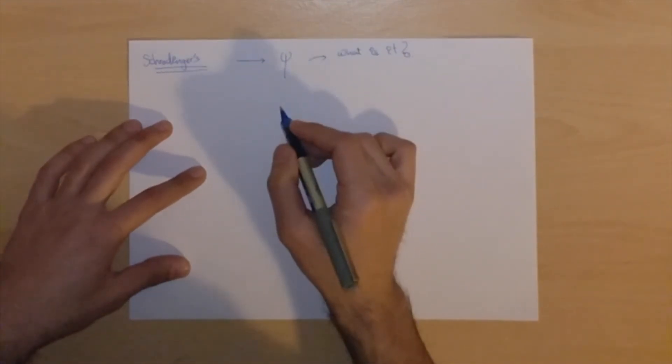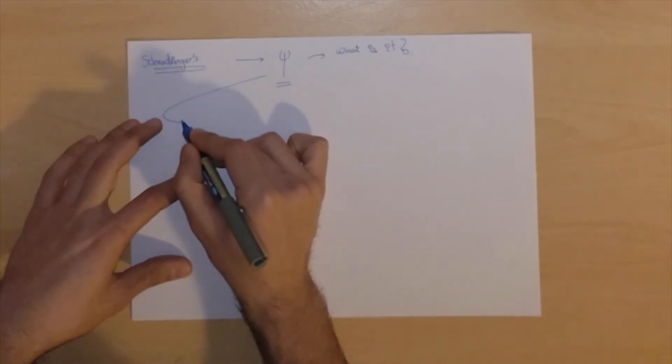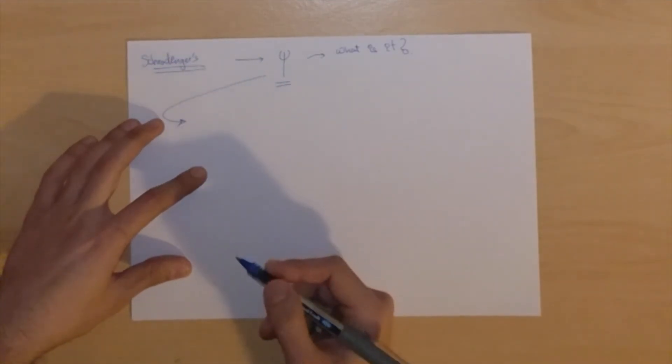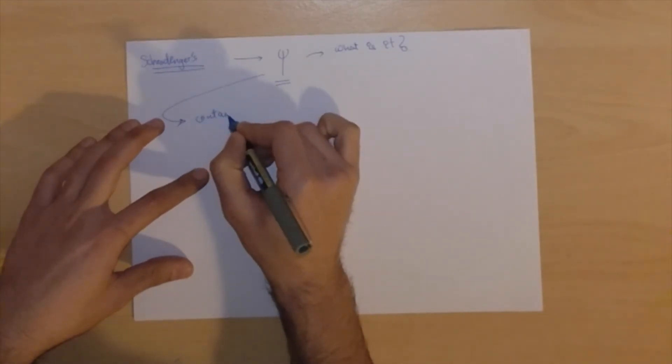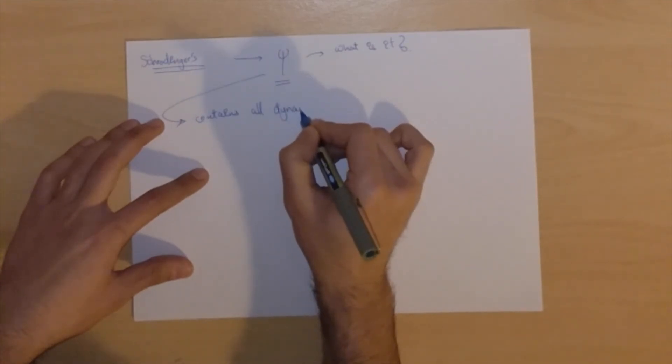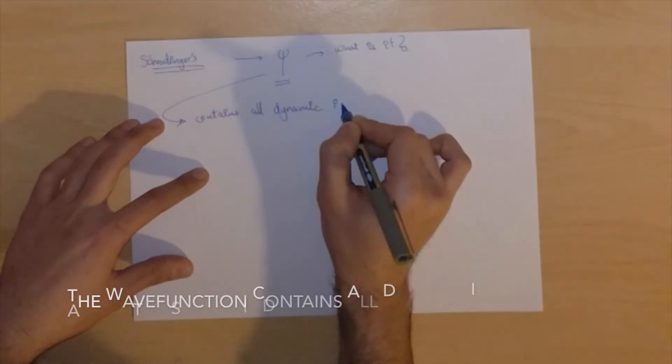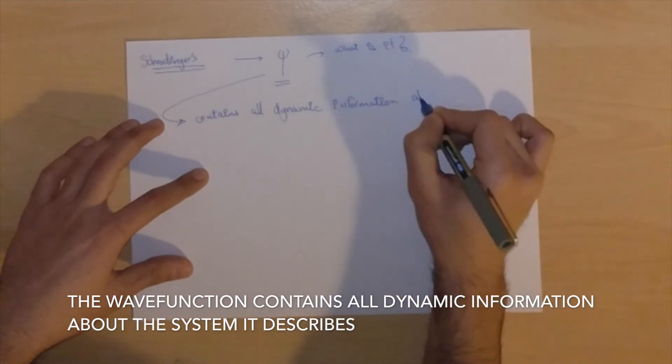Rather we saw why it exists. Now the wave function, we had used it to describe information about the particle, but more formally it contains all dynamic information about the system it describes.